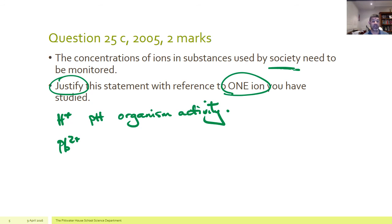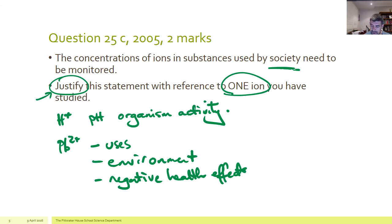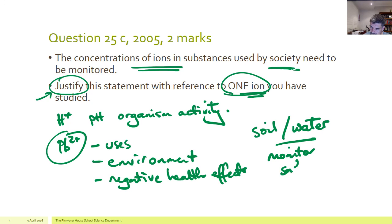Probably one of the other good ions to pick is lead. I've talked in this video about lead — the problems associated with its uses, the fact that it remains in the environment, and the fact that it has such a negative effect on health. To justify, we need to give reasons in reference to one ion studied. If we choose lead, we want to monitor concentrations because lead could get into our soils or water, and we know it has a detrimental effect on human health. Therefore we need to monitor levels to ensure they are safe and intervene if they are too high.